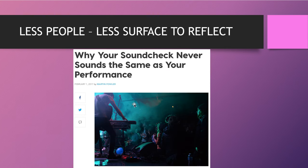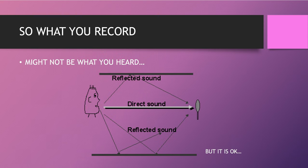Less people, less surface to reflect — that's correct. Imagine you're a live performer: you do the sound check in an empty venue, everything's correct, then when a lot of people come in, it sounds different all of a sudden. It's not you, ladies — it's the crowd providing so many surfaces to reflect on. So what you record might not be what you heard. This is the direct sound and this is the reflective sound — both are recorded by your microphone.